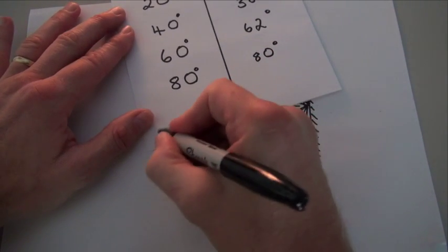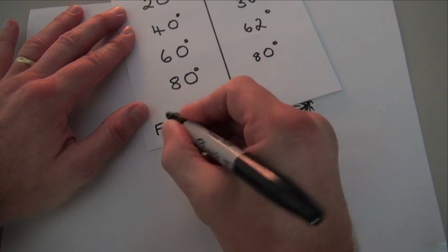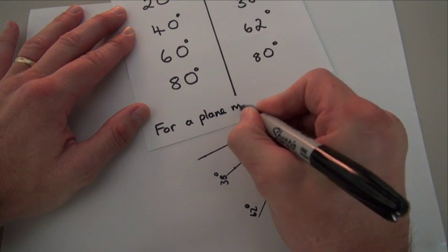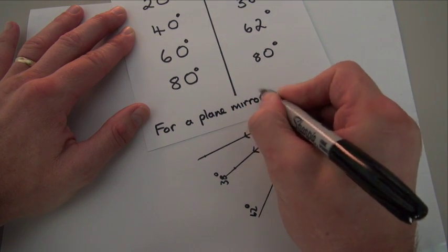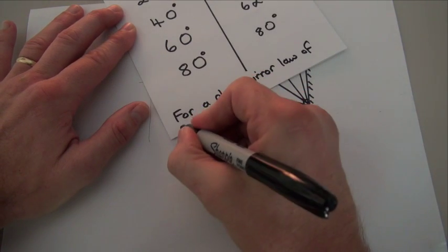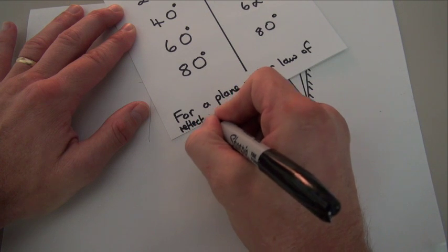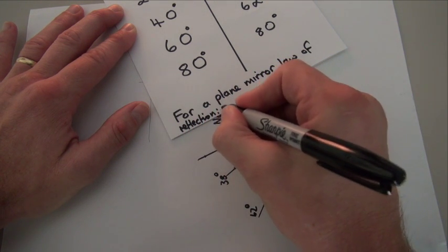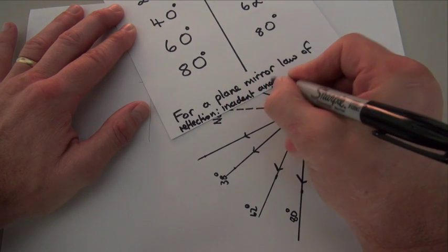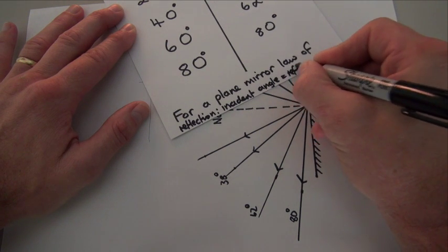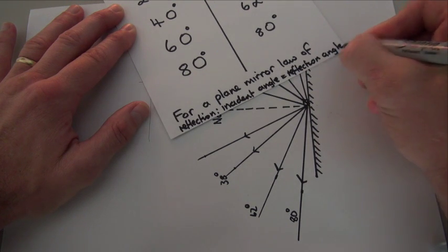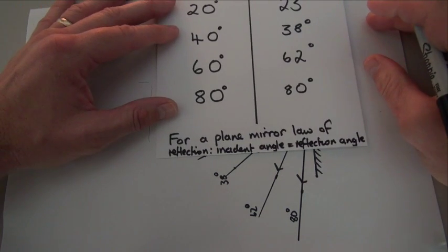So basically, when we look at the angles of the reflected ray and the angles of the incident ray, we notice that for a plane mirror the angles are always going to be the same. The angle of reflection is always the same as the angle of incidence — this is the law of reflection for plane mirrors. The incident angle equals the reflected angle, and we've proved this law through our experiment.